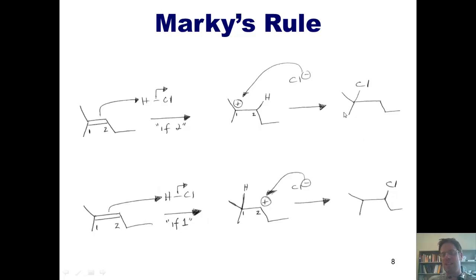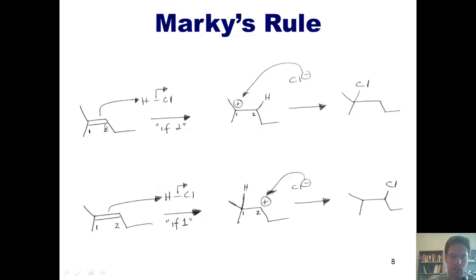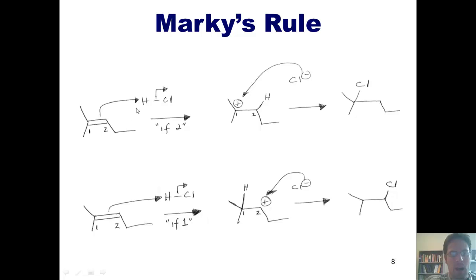This falls in line exactly with what Markovnikov's rule says: when you take an alkene and add HX — in this case HCl — the hydrogen always ends up on the carbon that has more hydrogens on it, and the chlorine ends up on the carbon that has fewer. Between carbons 1 and 2, carbon-2 has 1 hydrogen while carbon-1 has 0. Hence, our hydrogen from HCl ends up on carbon-2, and our chlorine ends up on carbon-1.